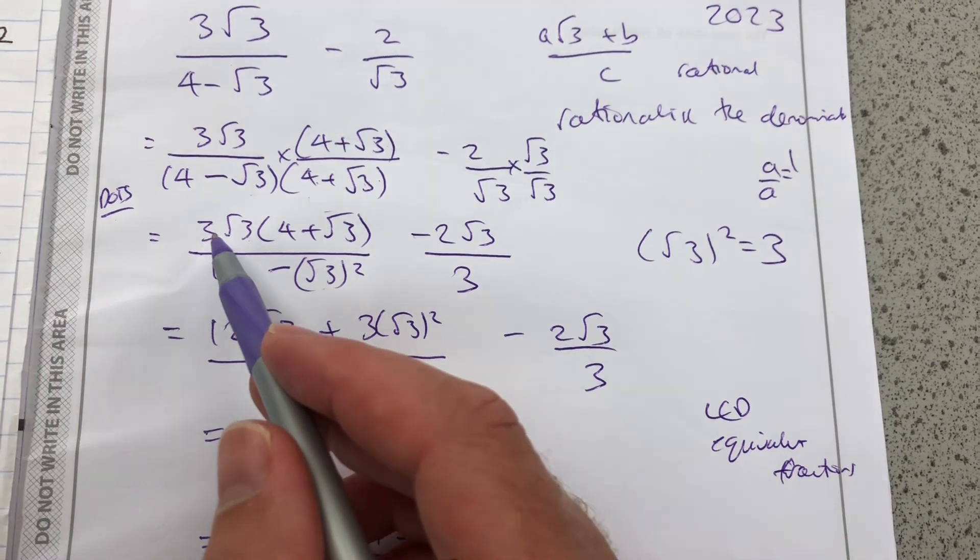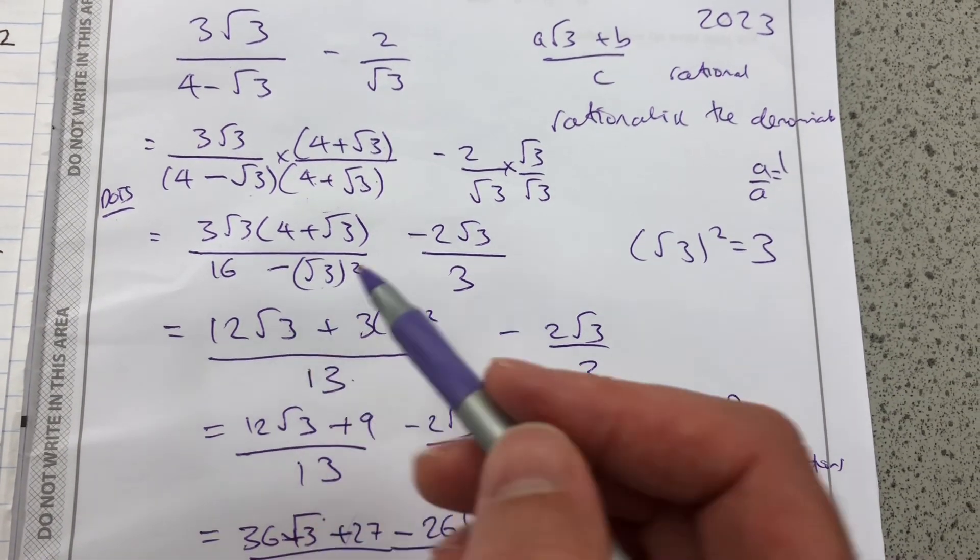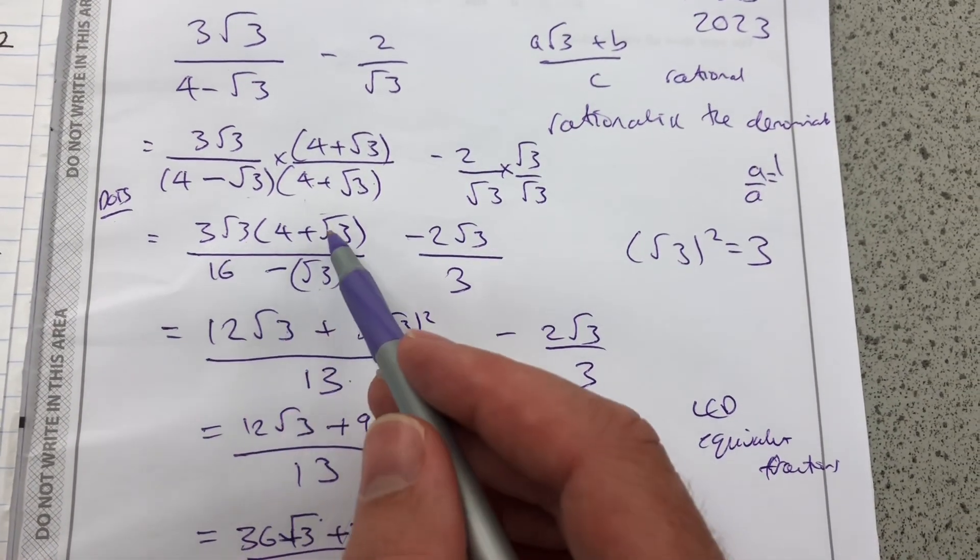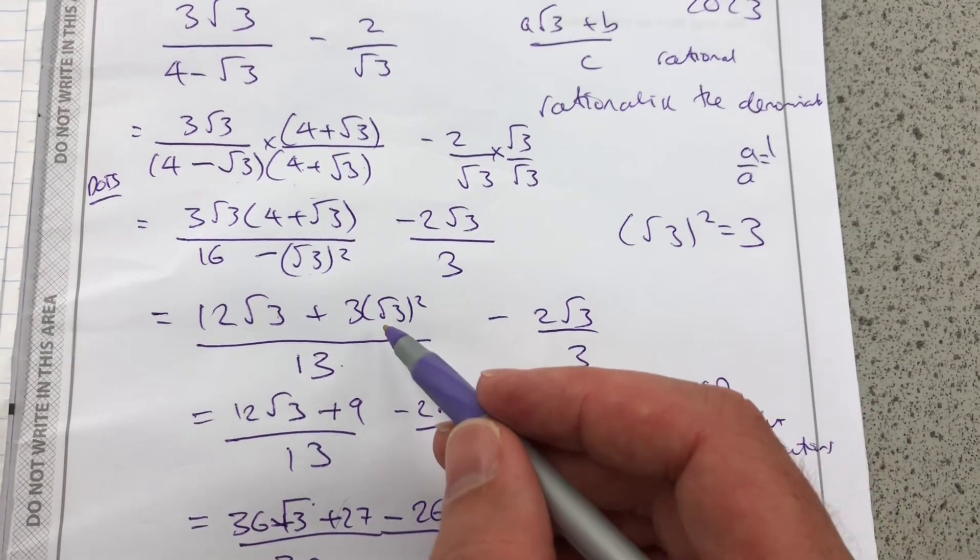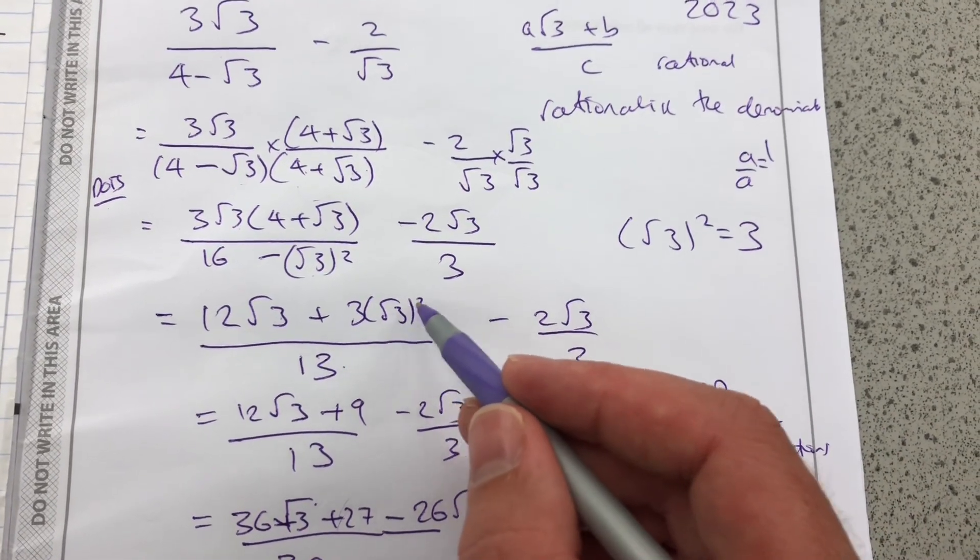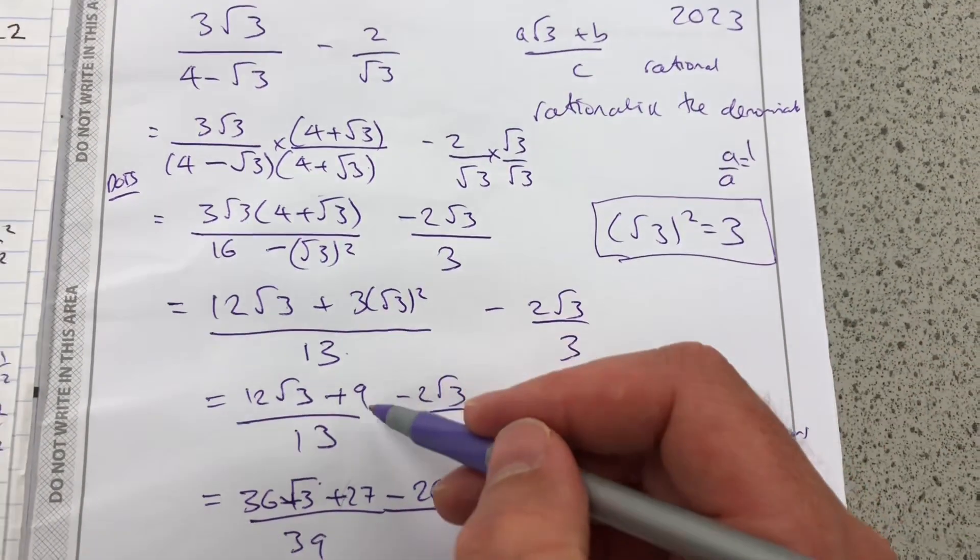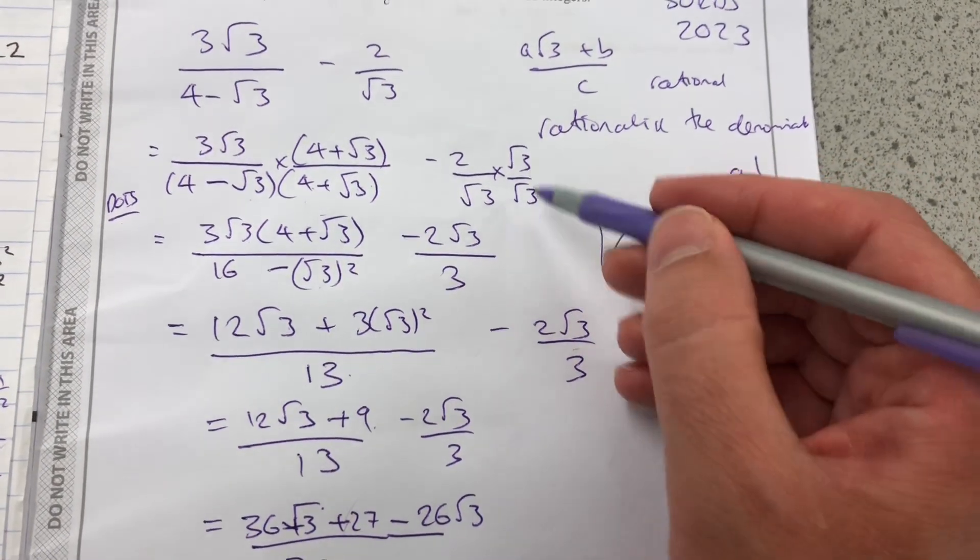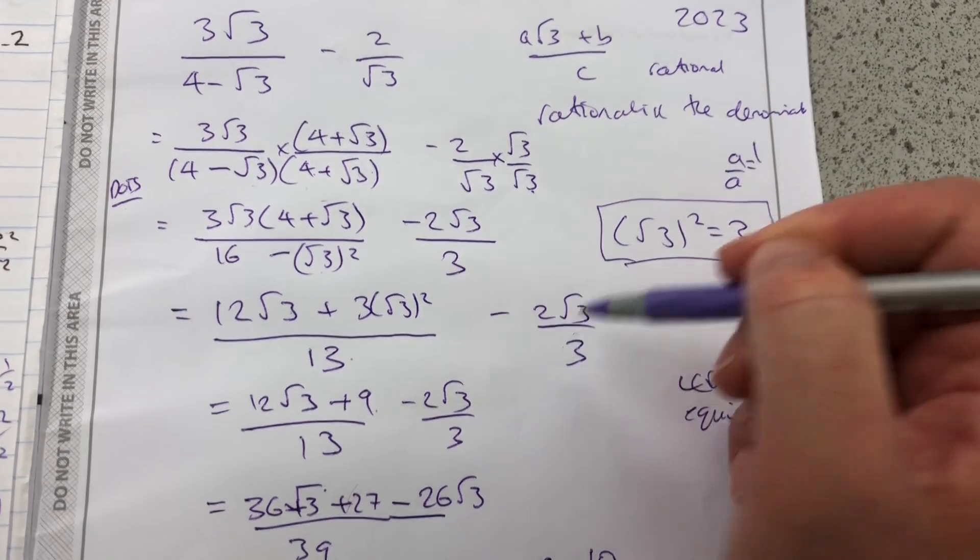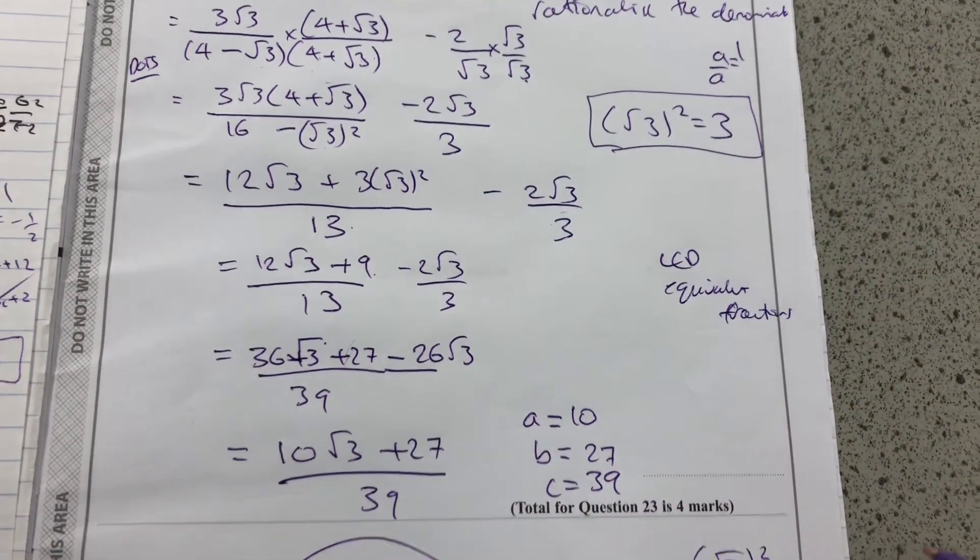And then the numerator. 4 times 3 is 12. Keep that root 3. But the 3 times root 3 times root 3 is going to give me 3 times root 3 squared. As we said, root 3 squared is 3. So that's 3 times 3, which is 9. Here I've multiplied by root 3 over root 3 to get 3. And it all simplifies to that. OK.